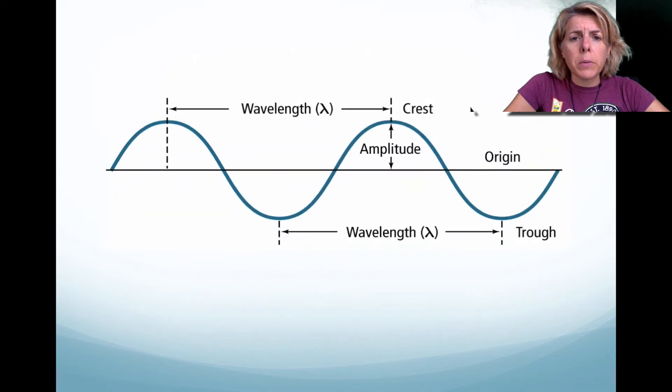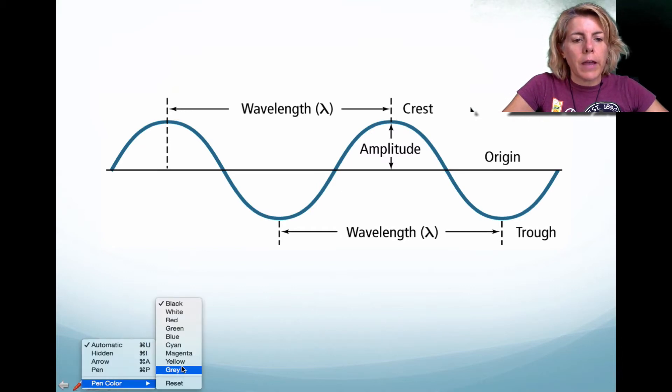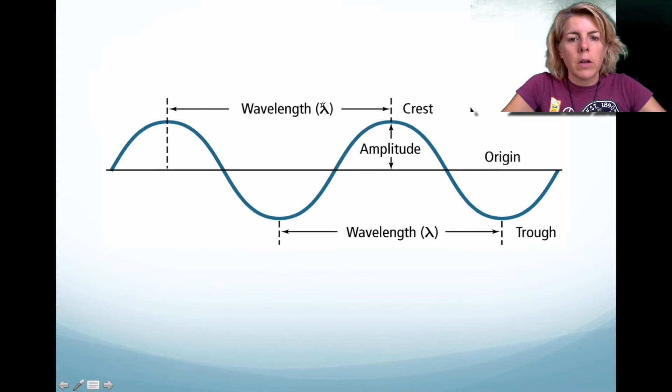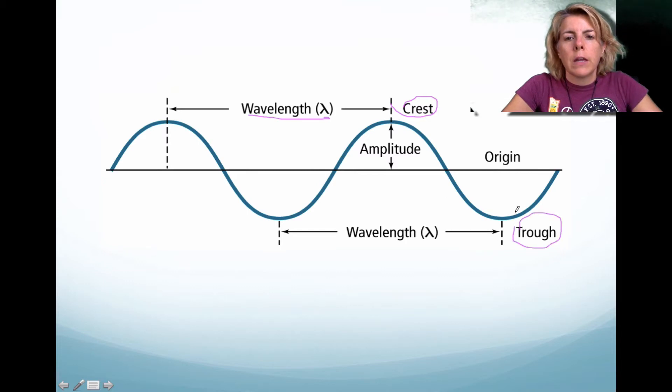Now this is a little bit of a review. Notice that when we're talking about waves, there are certain aspects that we need to consider. The first is wavelength, and wavelength is always crest to crest, or trough to trough. And then amplitude. Amplitude is always crest to origin. Now frequency, you'll hear that when we talk about electrons. That is cycles per second, or hertz.